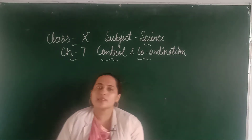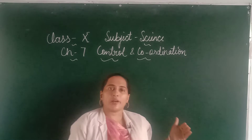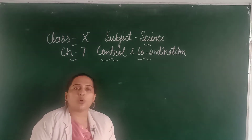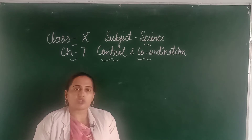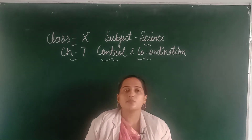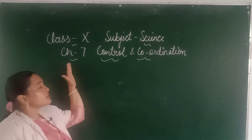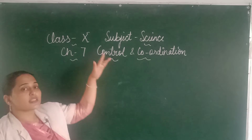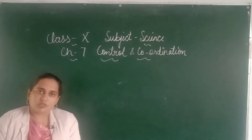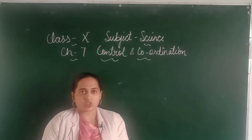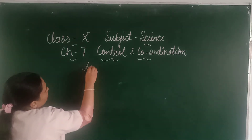Hello everyone, welcome back to your science class. In our previous video, we discussed control and coordination in plants — how control and coordination takes place inside a plant's body. That was from Chapter 7, Control and Coordination, Class 10th Science. Today in this video, we are going to study about control and coordination in animals.